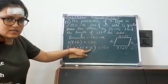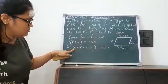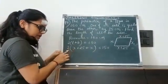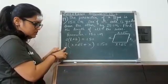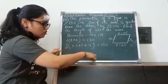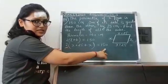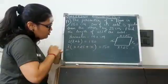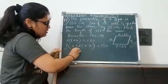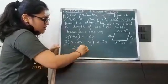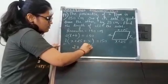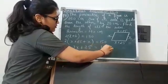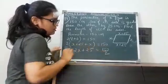Now, x and x gives 2x. I am taking this 2, which is in multiplication with the bracket, to the other side. Here it is in multiplication, so on the other side it will go in division. After solving, the bracket becomes 2x plus 25 and this will be 150 upon 2.